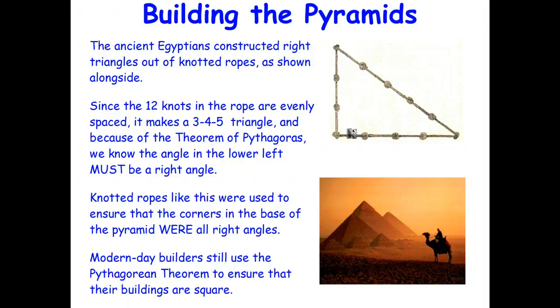So the Egyptians were able to use the Pythagorean theorem to help them build their pyramids. They could use this to make sure that the angles in the corners of the pyramids were actually at 90 degrees and not 89 degrees or 91 degrees.